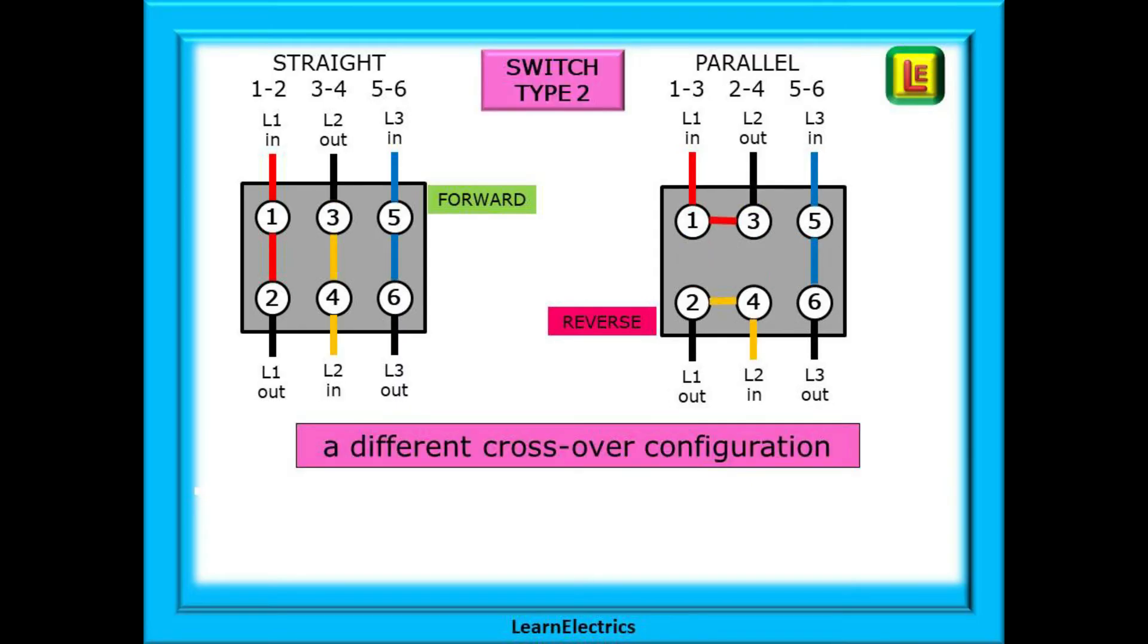Type 2 switches work differently. They have straight through connections as before, but the changeover of two phases is done by a parallel change, not a crossover. 1 goes to 3 and 2 goes to 4, and this time in our example 5 and 6 remain as a straight through connection.